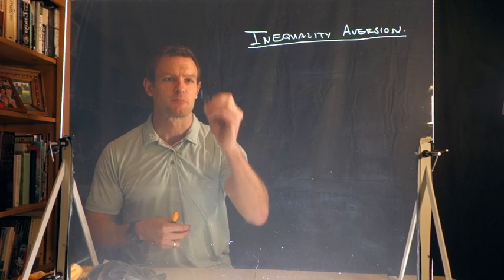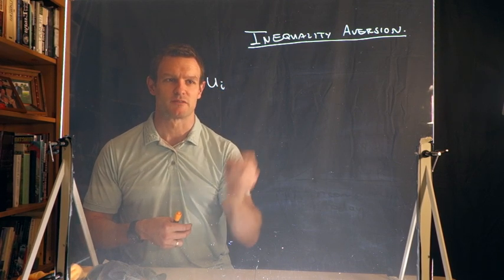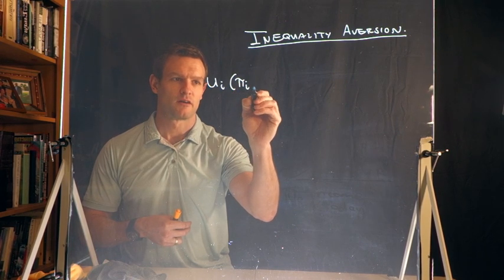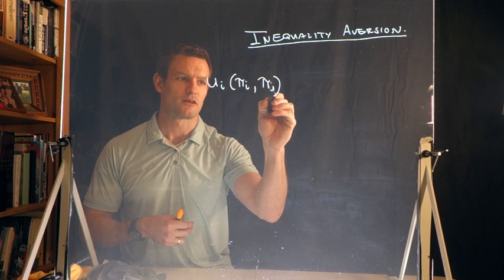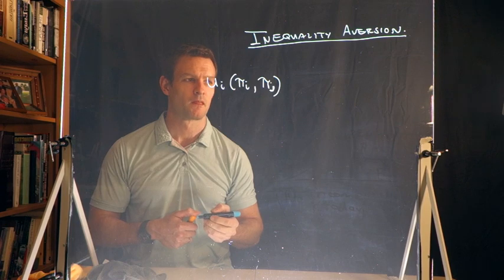So let's think about how we're going to capture this. Let's say, imagine someone, an agent, and they have a utility function U_i, and that is based on the payoffs that they receive and that another person j receives.